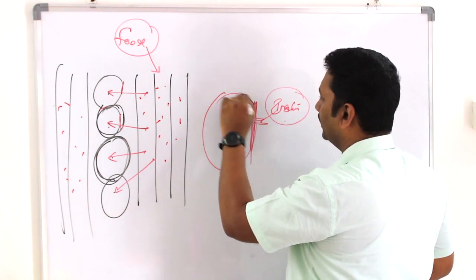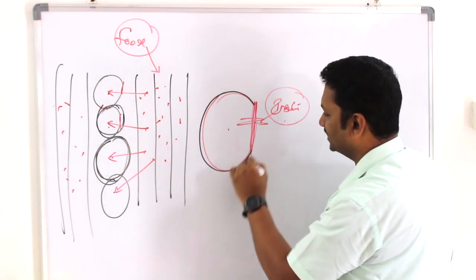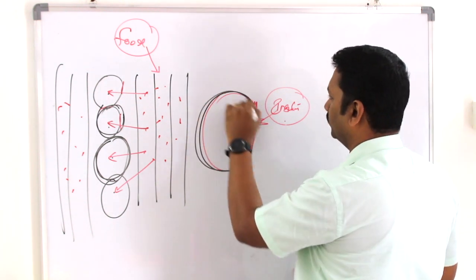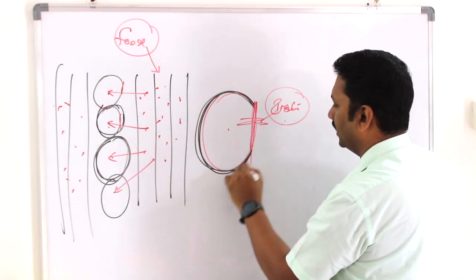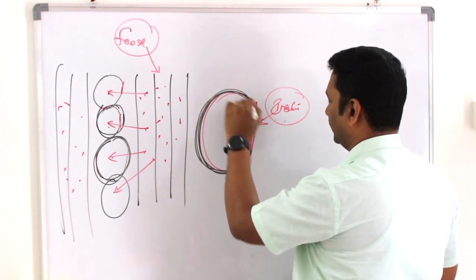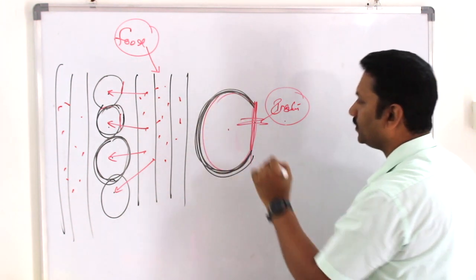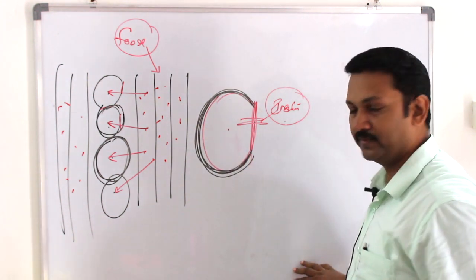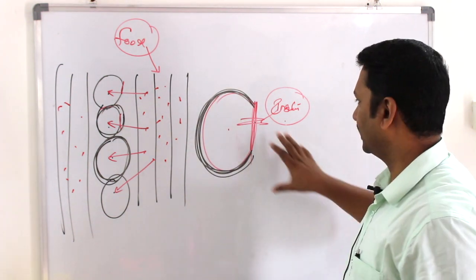Insulin resistance can be caused by obesity, PCOD, and hypothyroid. There are a few other conditions that also contribute to insulin resistance.